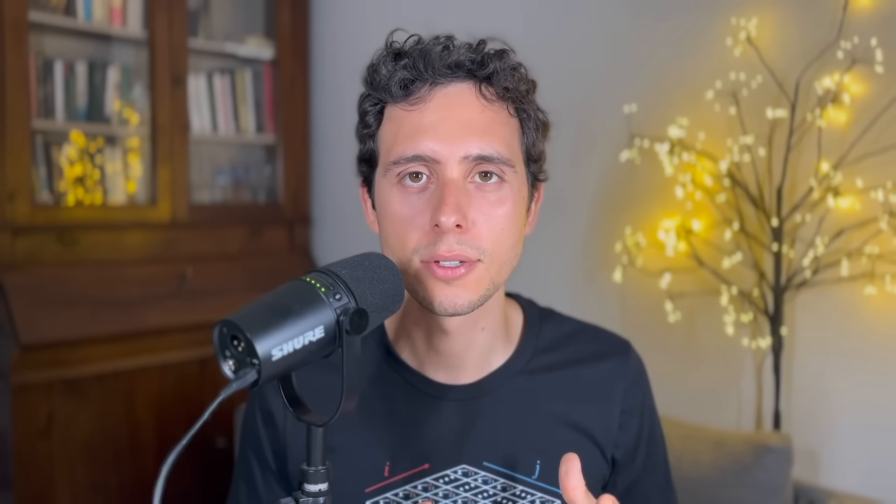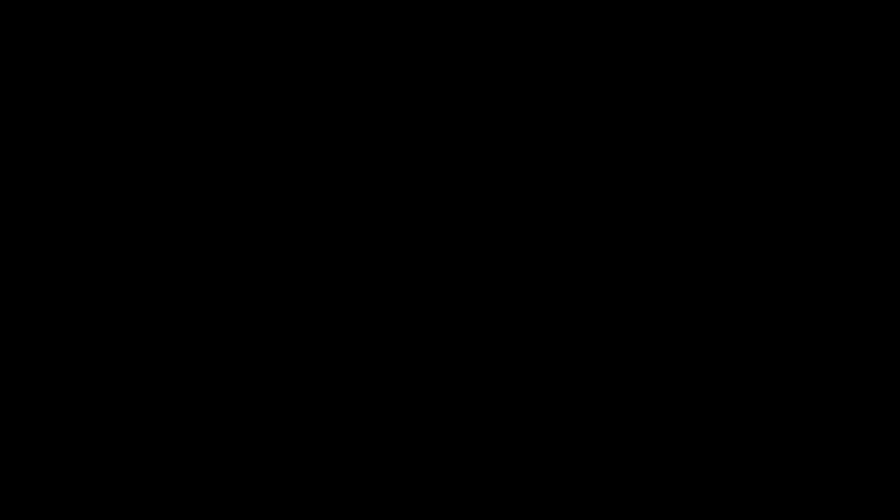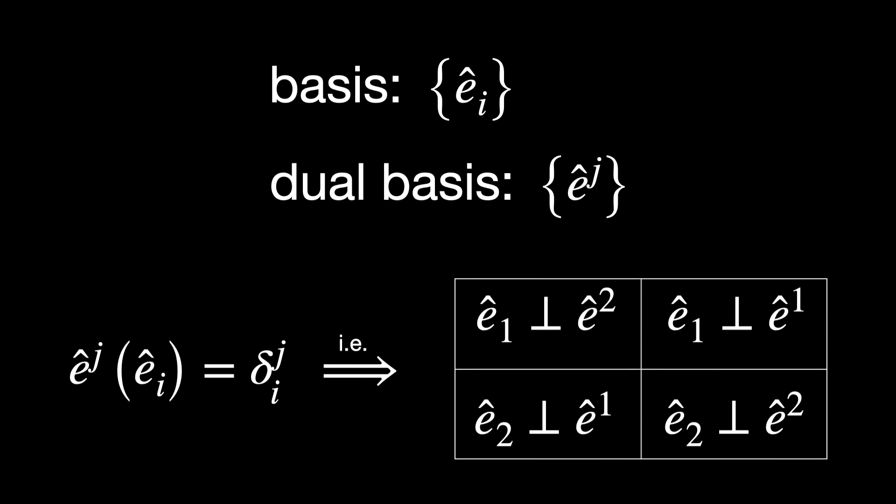But what about the basis co-vectors? In other words, the covariant basis vectors. Imagine you have a vector space with non-orthogonal basis, eᵢ subscript. Its dual basis has a basis êʲ superscript. Since these bases are dual with respect to one another, by definition we have that their dot product results in the identity matrix, and that each vector is orthogonal to all the other co-vectors except for its own dual.